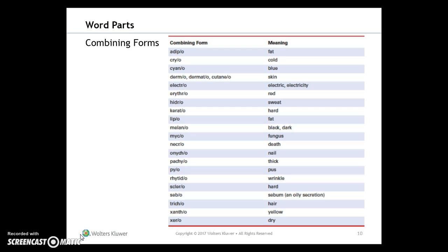Looking at word parts, the combining forms related to the integumentary system include: adipo, cryo, cyano, dermo, electro, erythro, hydro, kerato, lipo, melano, myco, necro, onco, pachy, pilo, rhytido, sclero, sebo, tricho, xantho, and xero.